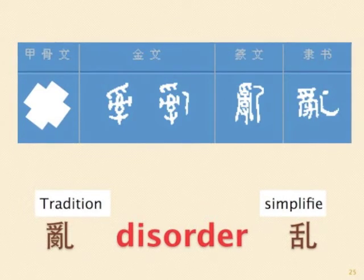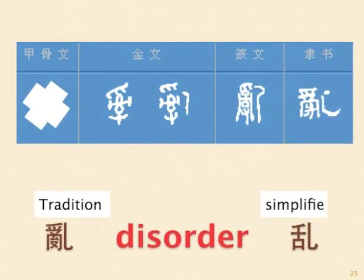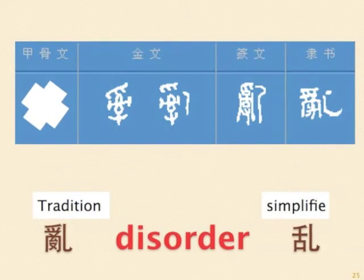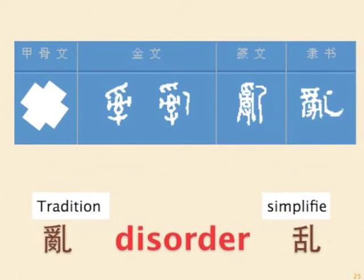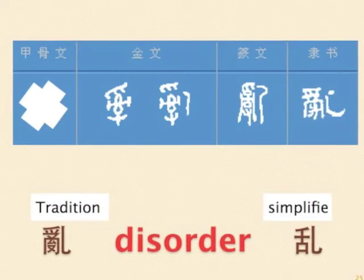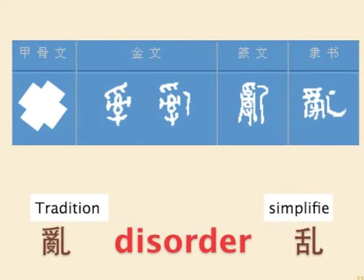Next word: disorder. The ancient drawing means grabbing strangled silk on a rack, implying things in disorder. The simplified form basically keeps the outer shape of the left side.